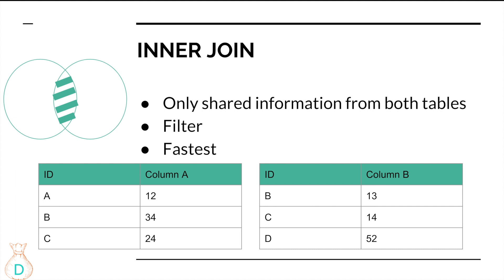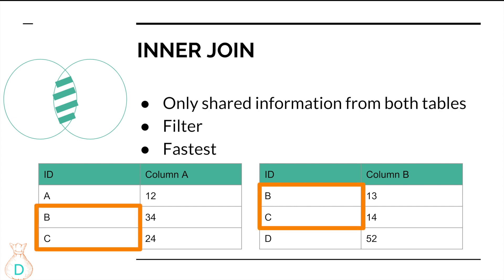The first one is inner join — it only takes information shared between the two tables. If you have ID columns A and B and inner join on ID, you find the commonly shared IDs, which are B and C. The final table will only contain B and C. Inner join is actually the fastest join of all, so if you know the dates or customer IDs are commonly shared across two tables, always use inner join. It also acts as a filter, removing anything not shared between the two.